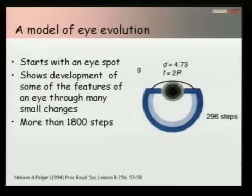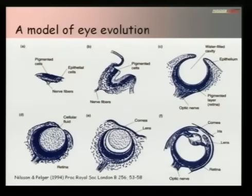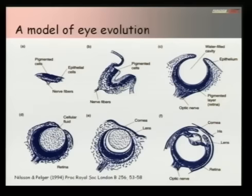They add more features — a lens and a cornea — and claim that in about 1,800 steps you can evolve from an eye spot to a rather complicated eye like the one we have. They show that all the various stages actually exist in nature today: from an eye spot on the top left to the eye of a cephalopod — a squid or octopus, which is a very advanced eye — in the bottom right. So far, so good. There are a few problems though.